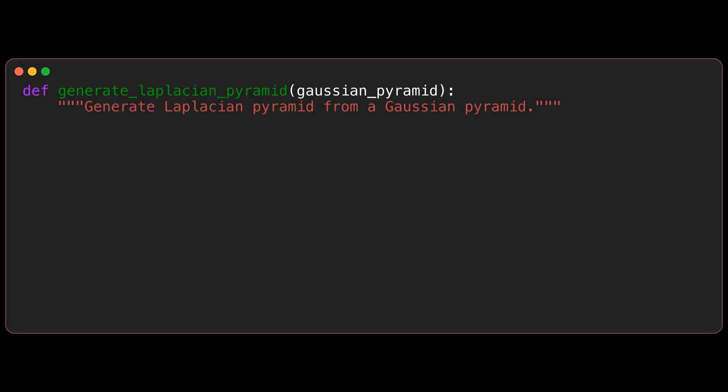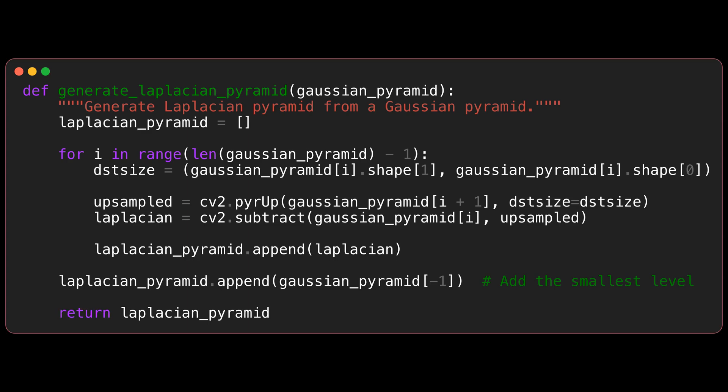To construct a Laplacian pyramid, we start with the Gaussian pyramid as input. We upsample the low resolution image in the next level of the Gaussian pyramid and compute the residual image. This residual image captures the high-frequency details that are present in the current level but not in the next level. For the last level of a Laplacian pyramid, we set it as the image with the lowest resolution in the Gaussian pyramid.